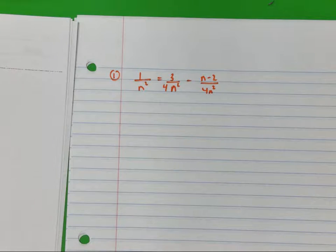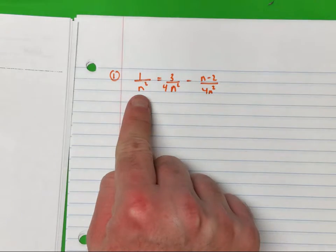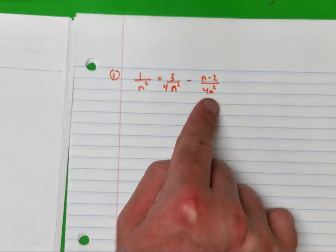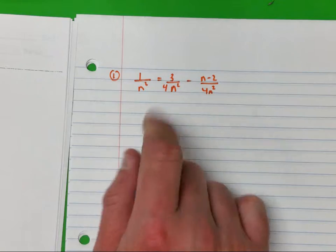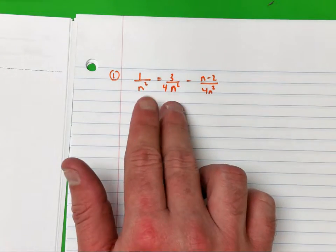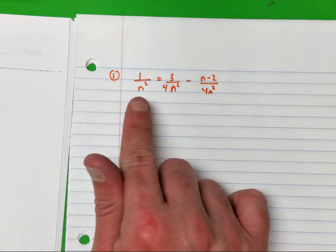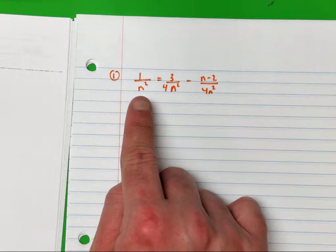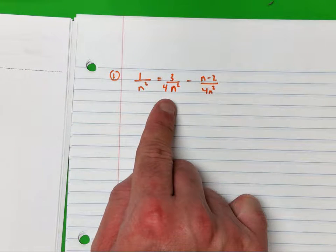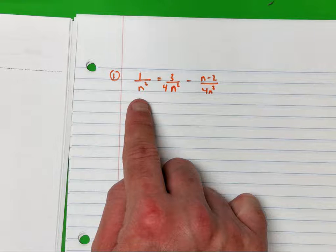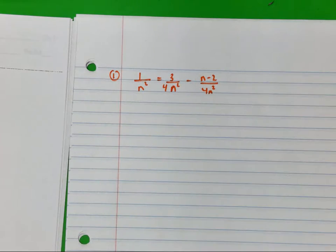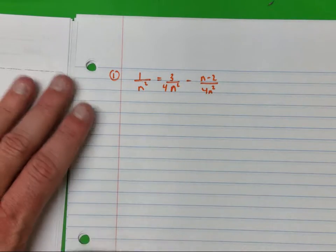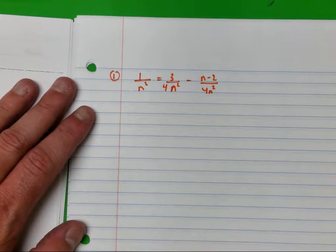You want to get rid of the fractions so you can work with something easy. What you do is examine the denominator. You have n squared and four n squared. Can I make n squared become four n squared? Yes — by multiplying by four. So the common denominator here will be four n squared.